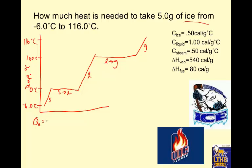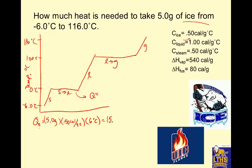Q for the solid: 5 g × 0.50 cal/(g·°C) × 6°C = 15.0 calories. Then for the flat line (melting), Q = m·ΔH_fusion: 5.0 g × 80 cal/g = 400 calories just to melt it.